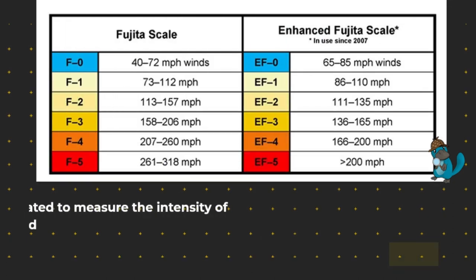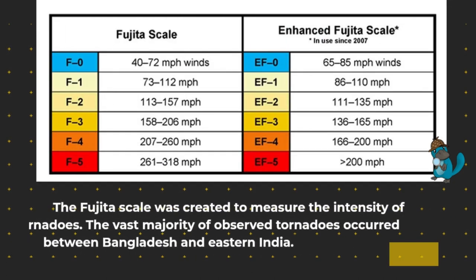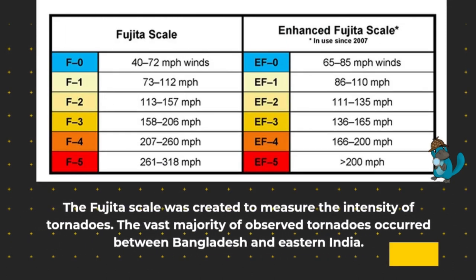The Fujita Scale was created to measure the intensity of tornadoes. The vast majority of observed tornadoes occurred between Bangladesh and eastern India.